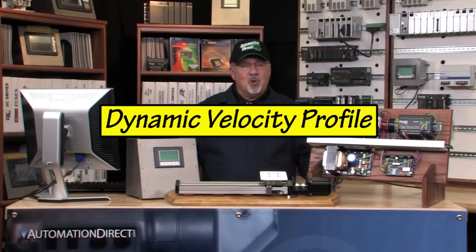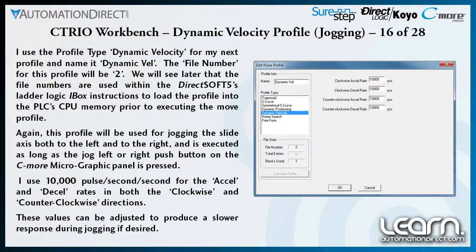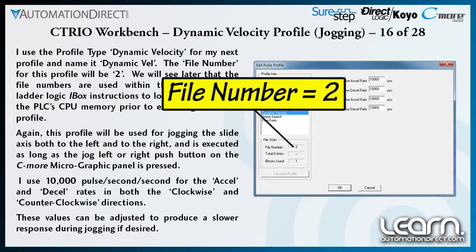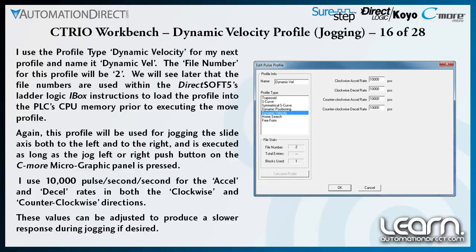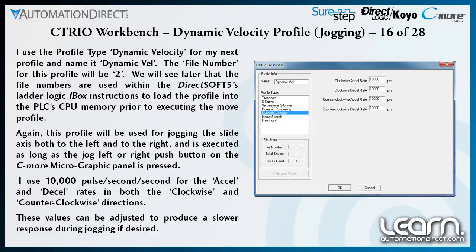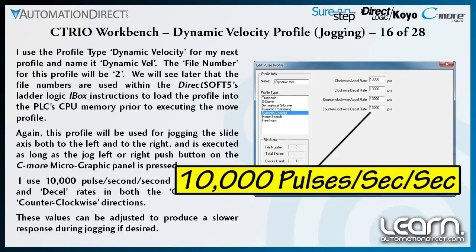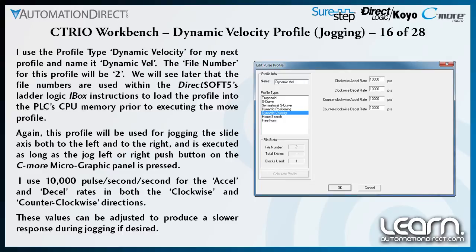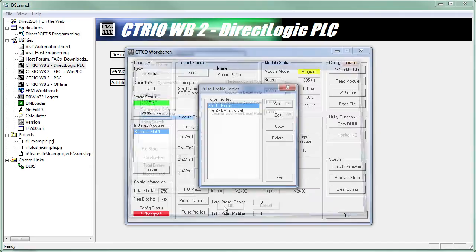Next, I'll create my Dynamic Velocity profile that I will use for jogging my axis. I name it Dynamic VEL; the file number defaults to 2. Later I will show how the numbers are used within the DirectSoft 5 ladder logic iBox instruction to load the profile into the PLC's CPU memory prior to executing the move profiles. The Dynamic Velocity profile will be used for jogging the slide axis both to the left and to the right, executed for as long as either the jog left or jog right push button on the C-More micrographic panel is pressed. I use 10,000 pulses per second per second for the Accel and Decel rates in both the clockwise and counterclockwise directions. I click OK to add this profile to my table.